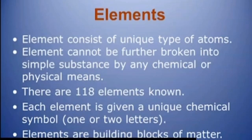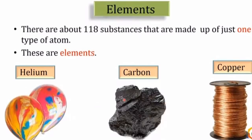Element consists of unique type of atoms. Element cannot be further broken into simple substance by any chemical or physical means. There are 118 elements known. Each element is given a unique chemical symbol. Elements are building blocks of matter. Scientists have discovered 118 elements of these 92 elements occur in nature, while the remaining are man-made.